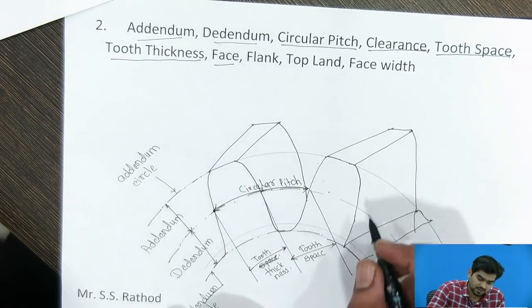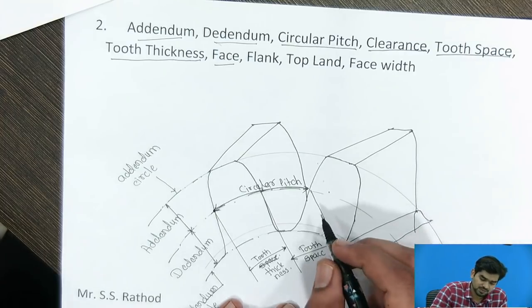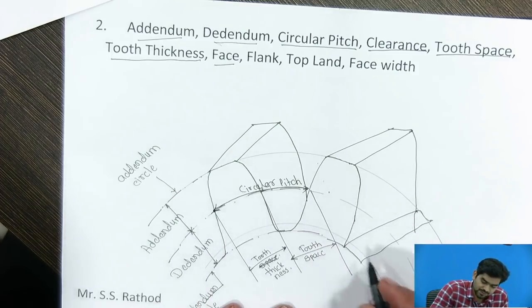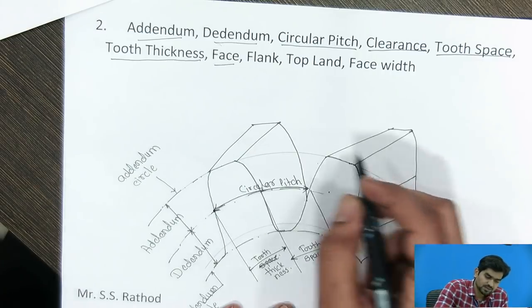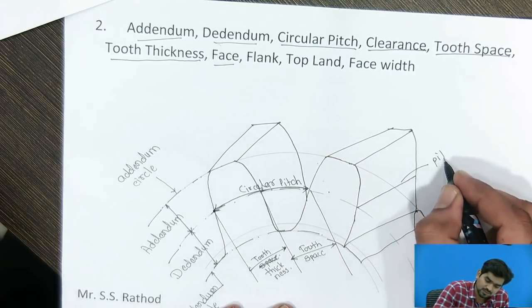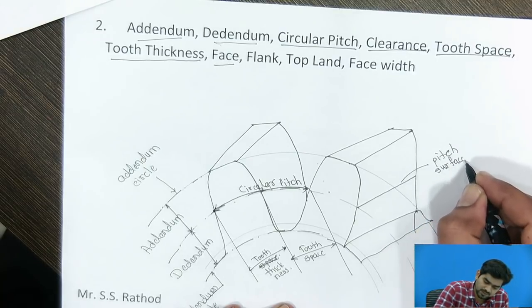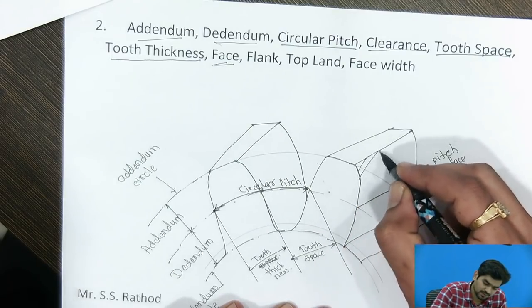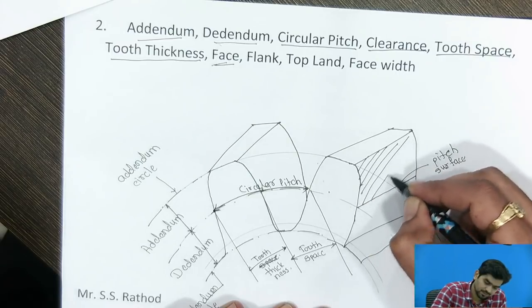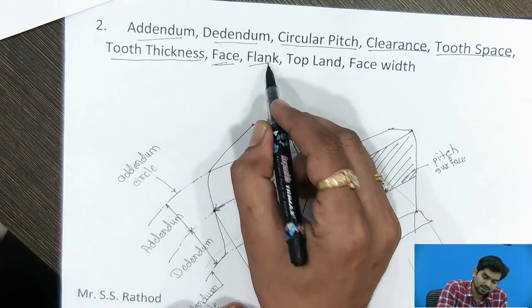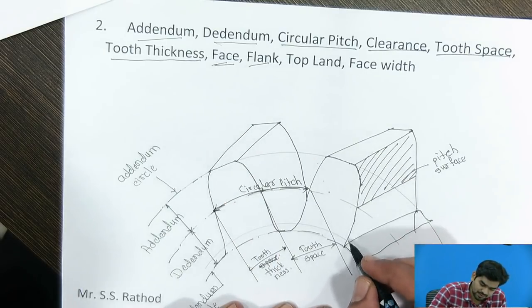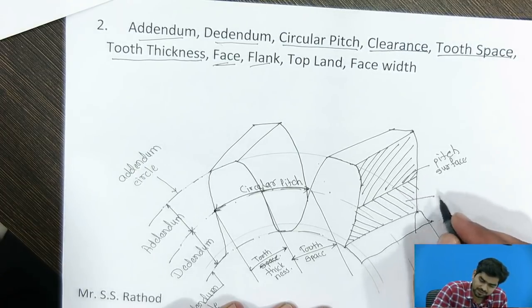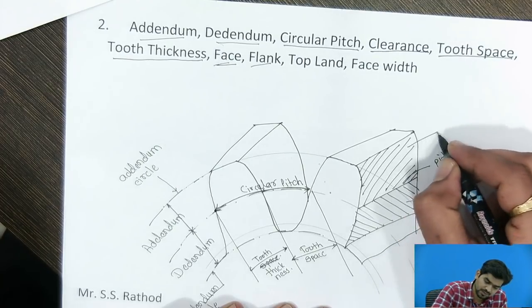Face is nothing but the surface above the pitch surface. The pitch surface is the surface at which the pure rolling action will occur, corresponding to the pitch circle. So face is the surface above the pitch surface — this shaded portion is called face. Flank is the portion below the pitch surface, called the flank. This portion is the flank, and this surface is the face.